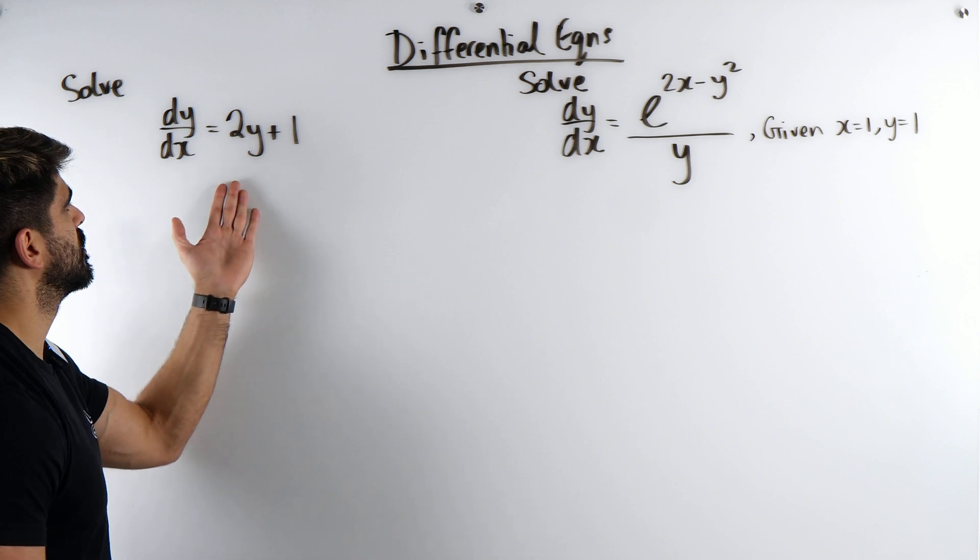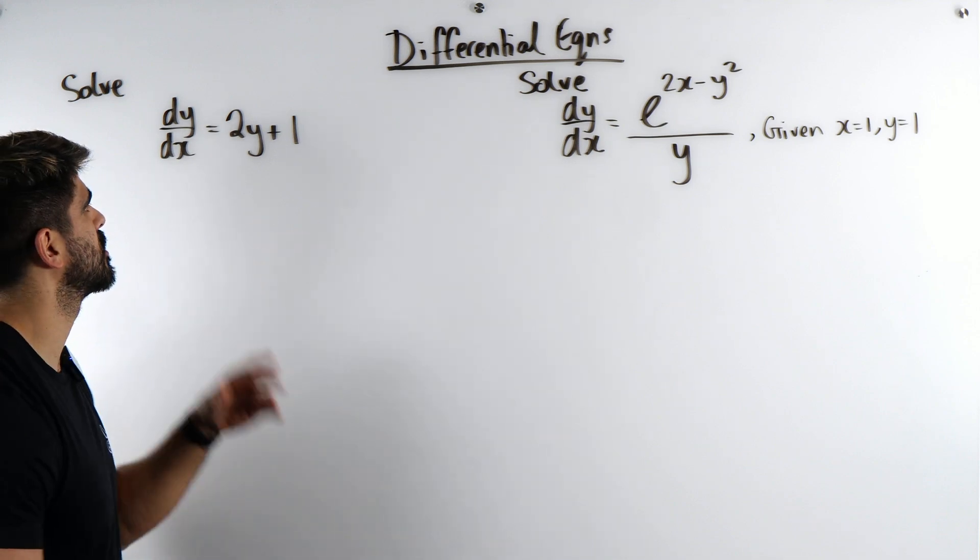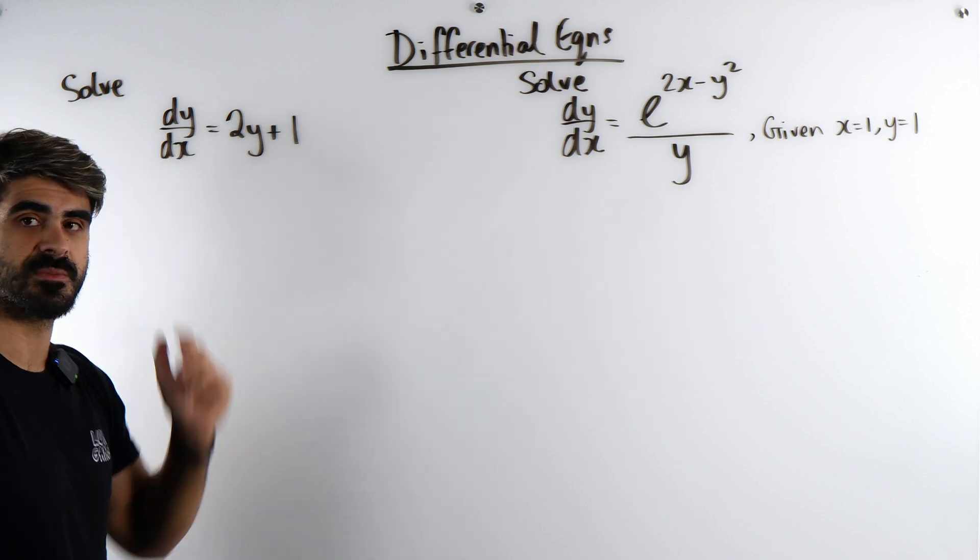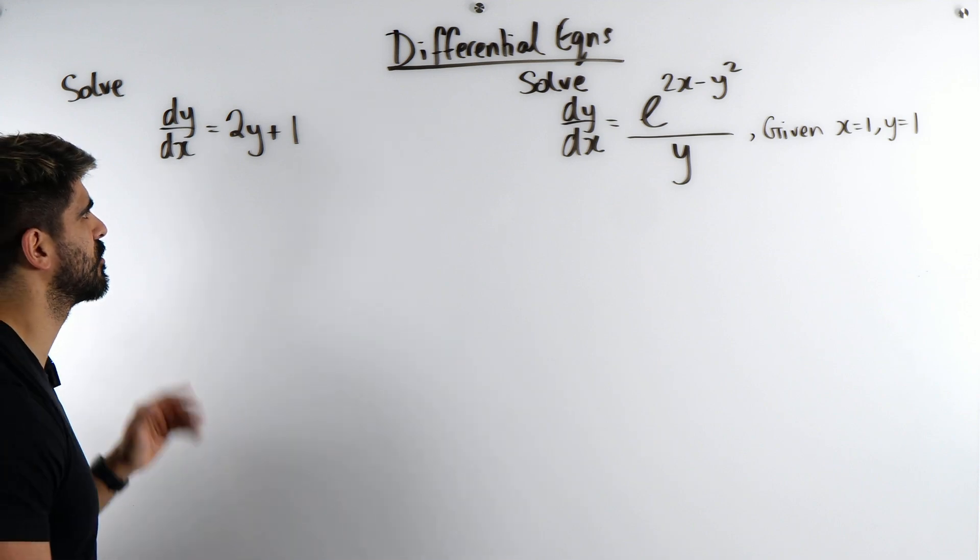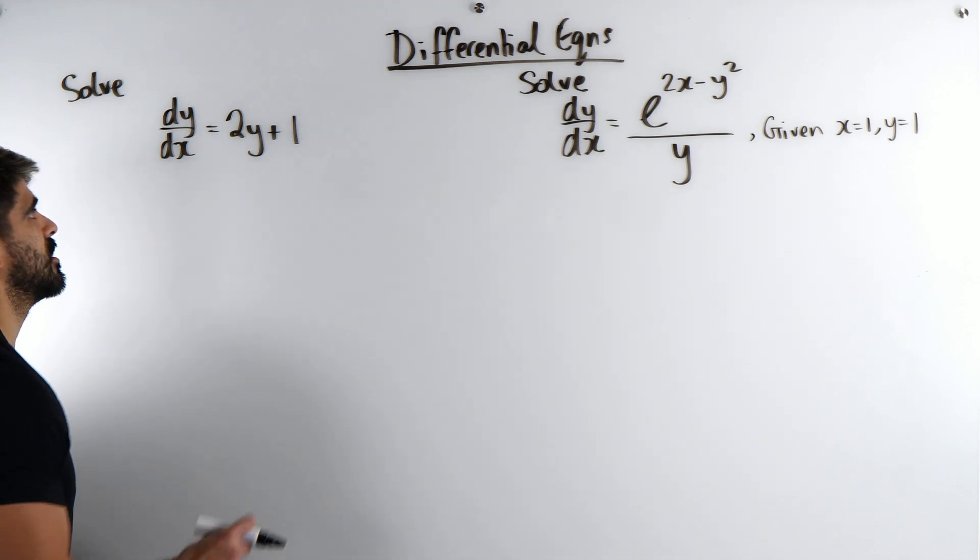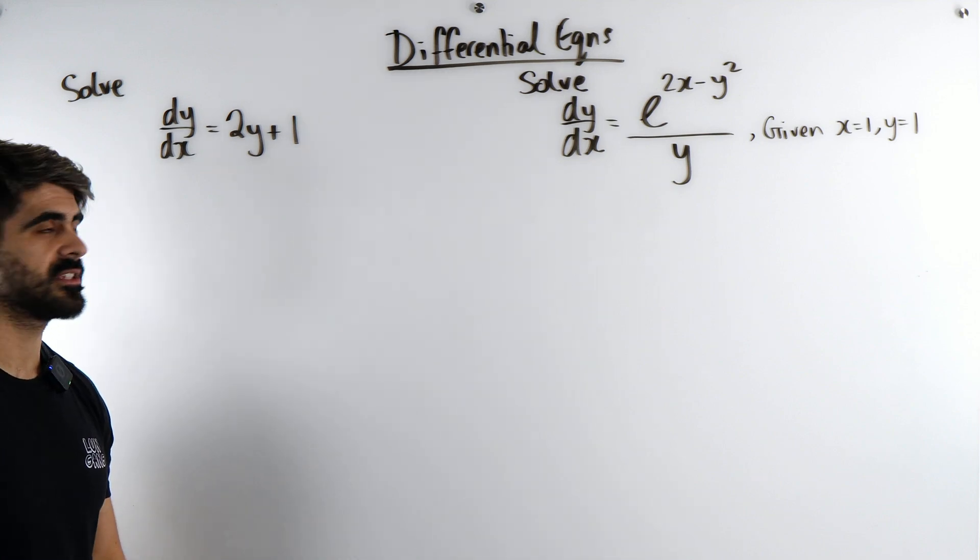But the only way to do this is by multiplication and division only. So you might be thinking, how do I get this y to the side of the dy? I can just minus 2y. No, that would then be further maths where you have to use integrating factors. But in normal maths, the only way to get the y's onto this side is through division. But I have a cheeky tactic here.